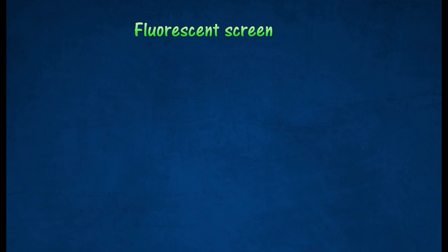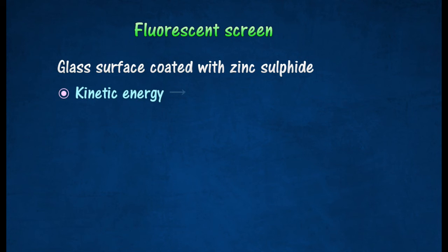The fluorescent screen glows and forms a light spot that can trace out a pattern as long as there are electrons hitting it. The inside of the screen is coated with phosphor or zinc sulfide so that it fluoresces when hit by electrons. Thus, the kinetic energy of the electrons is converted into light energy.